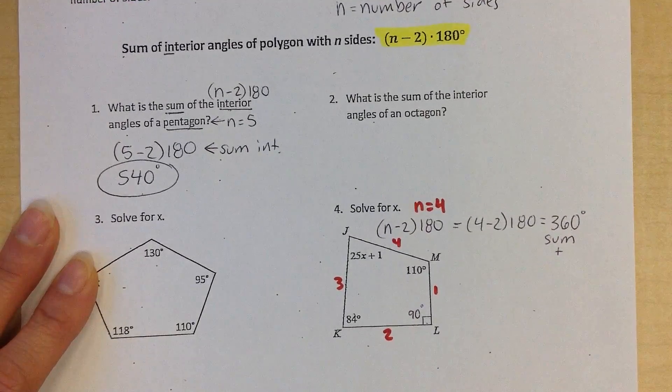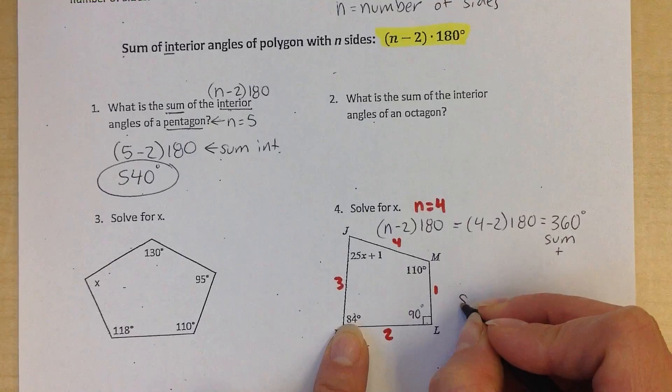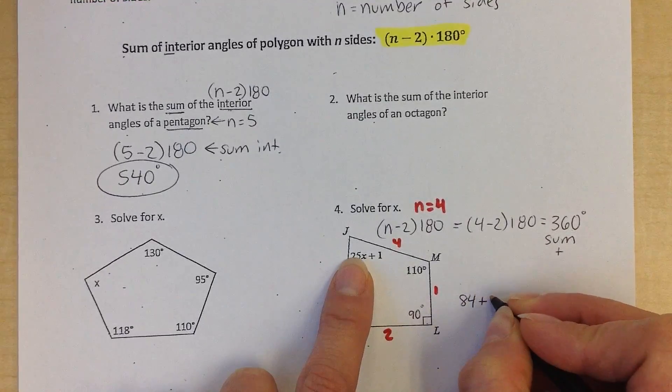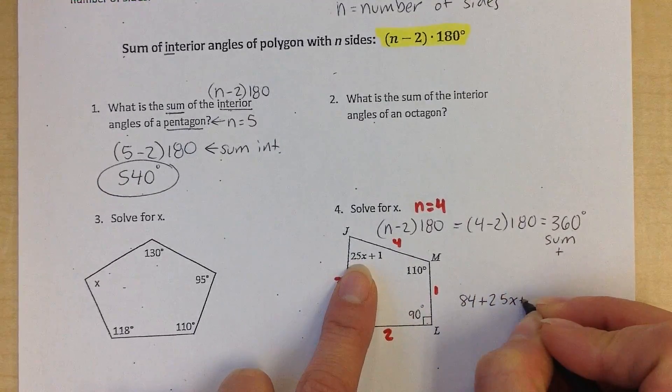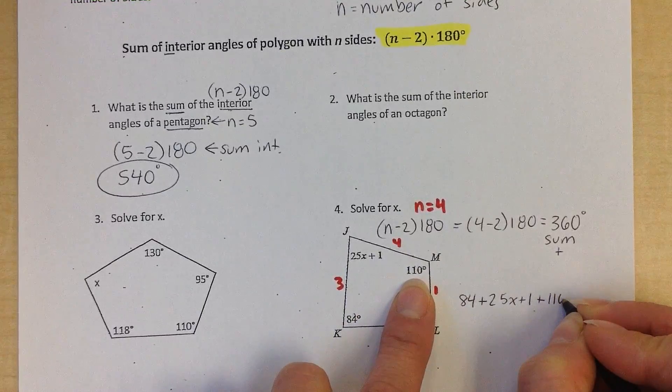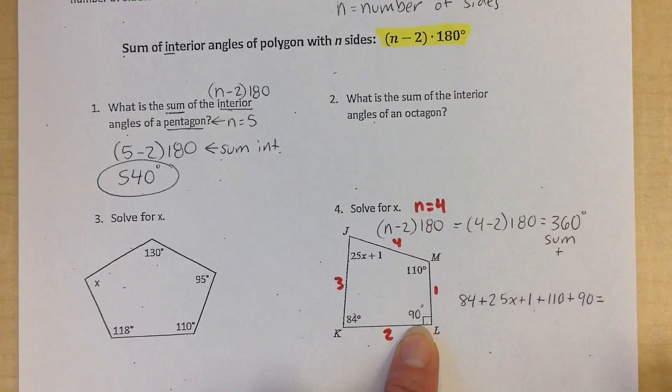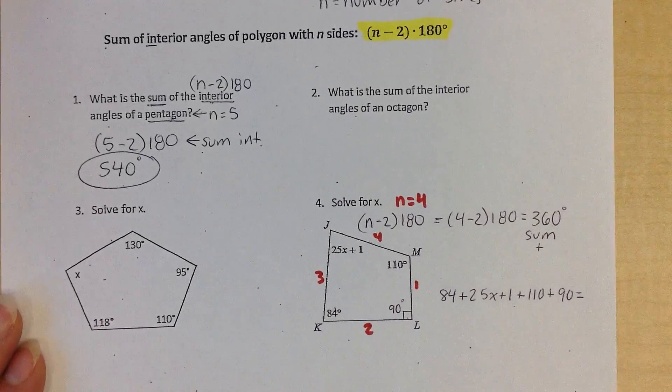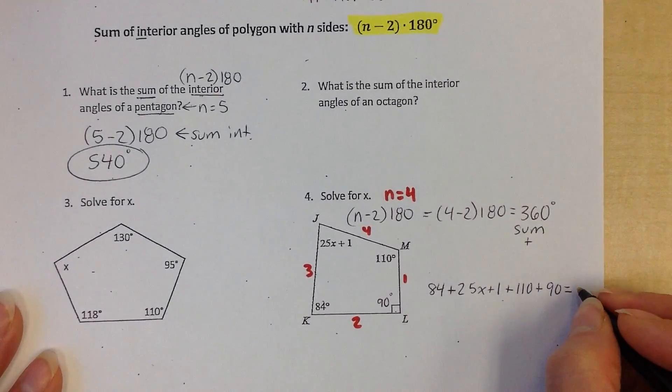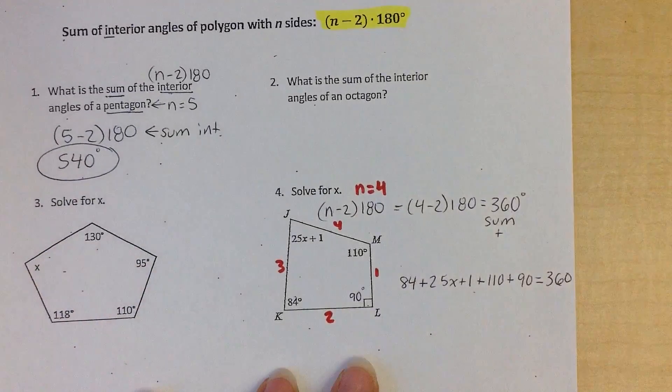Well, I'm going to do just what that says. This is my sum of the interior angles. Sum means plus. So I'm going to take all these angles. 84 plus 25x plus 1 plus 110 plus 90. And what do I get when I add those together? I'm going to get 360.